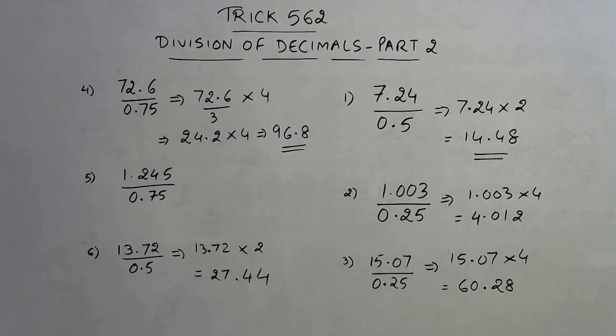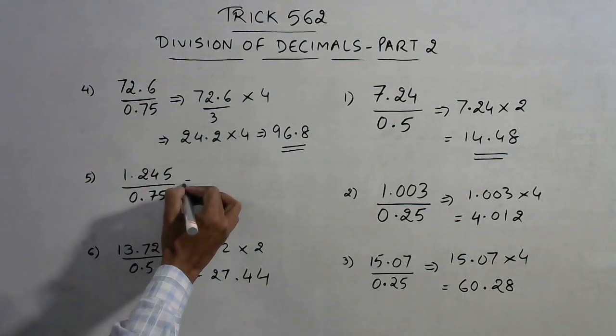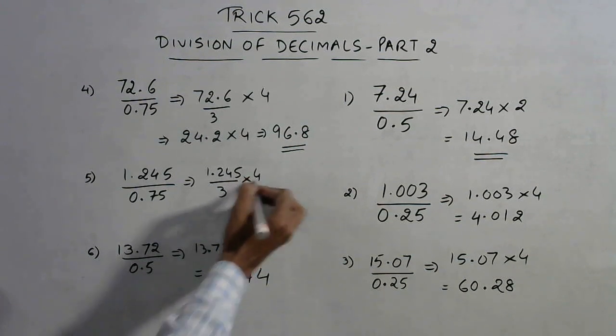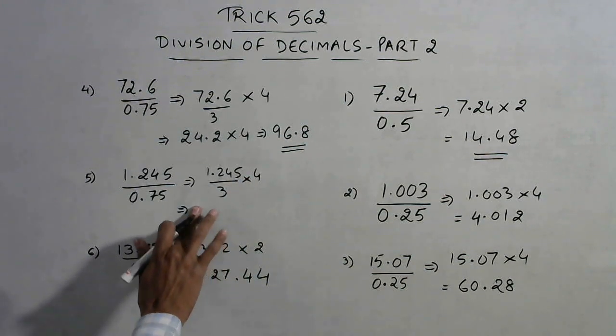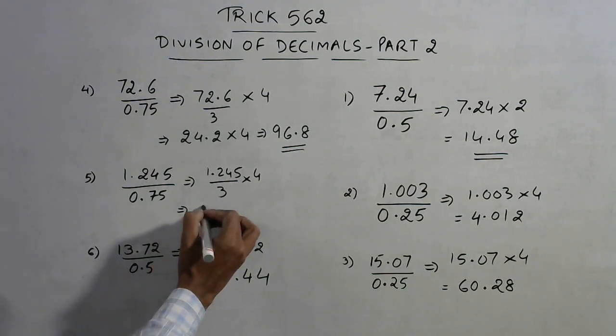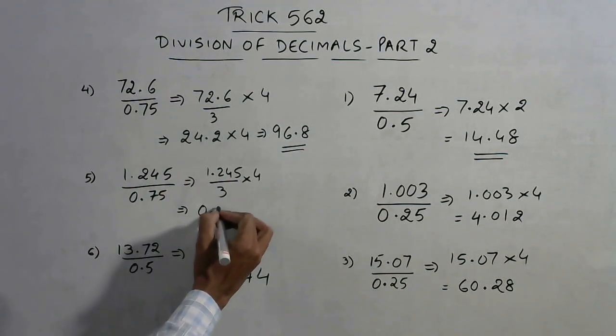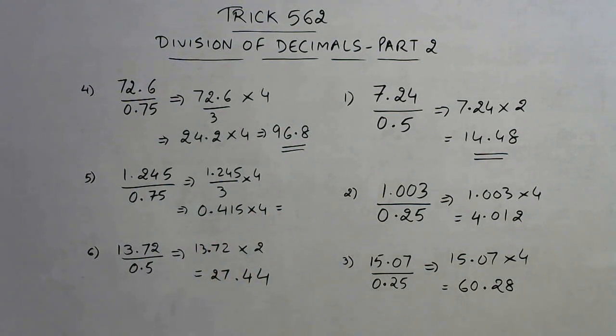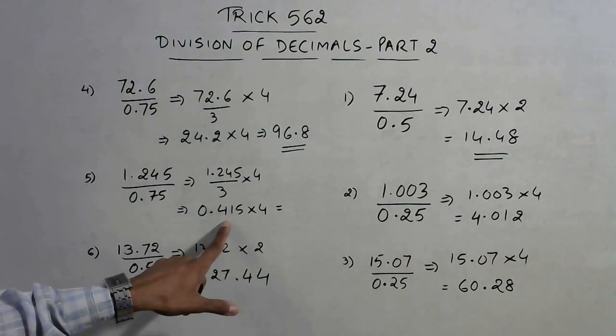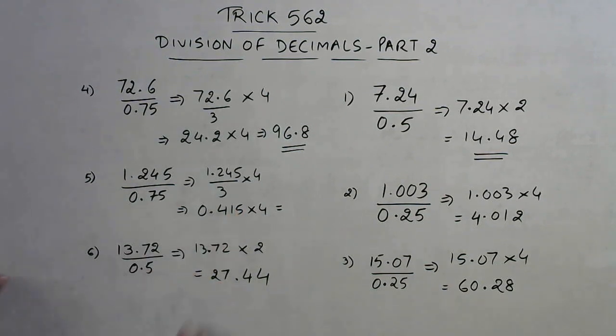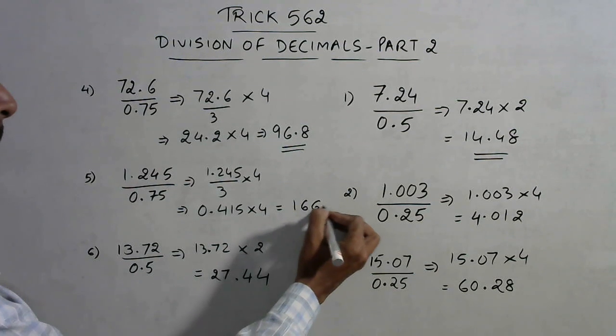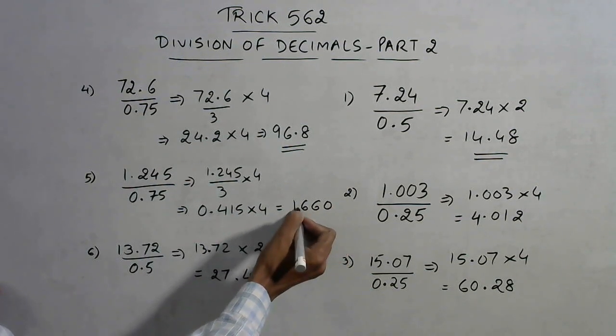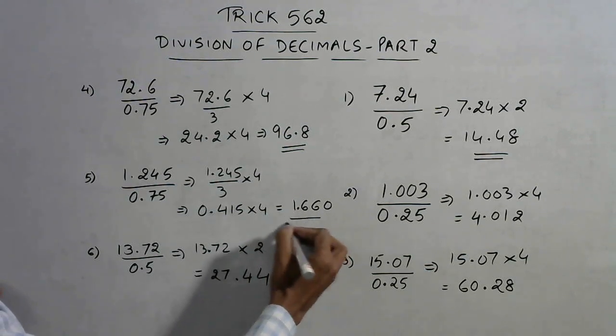Isn't that easy? Let's apply the rule here. See here 1.245, so divide by 3 and into 4. So what do you obtain after division? 0.415 into 4. Now you need to double this 415 twice: 415, 830, 1660, so 1660. And now put a decimal three digits, so from here 1, 2, 3 - 1.66 is the answer for the problem.